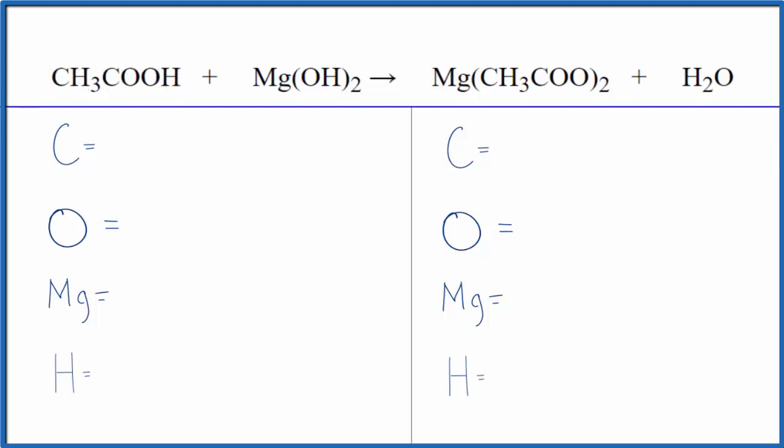We use the one that we have written right here. Count the carbons up: one, two carbon atoms. Oxygens: one, two, plus we have one here times this two, so four oxygen atoms. One magnesium. And hydrogen: three plus one is four, plus two times the one, two. Six hydrogen atoms.